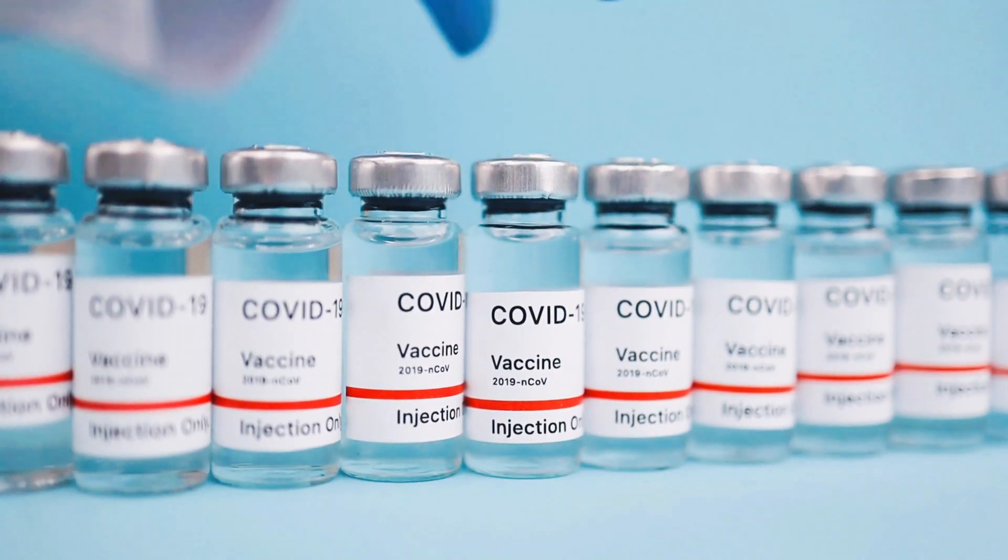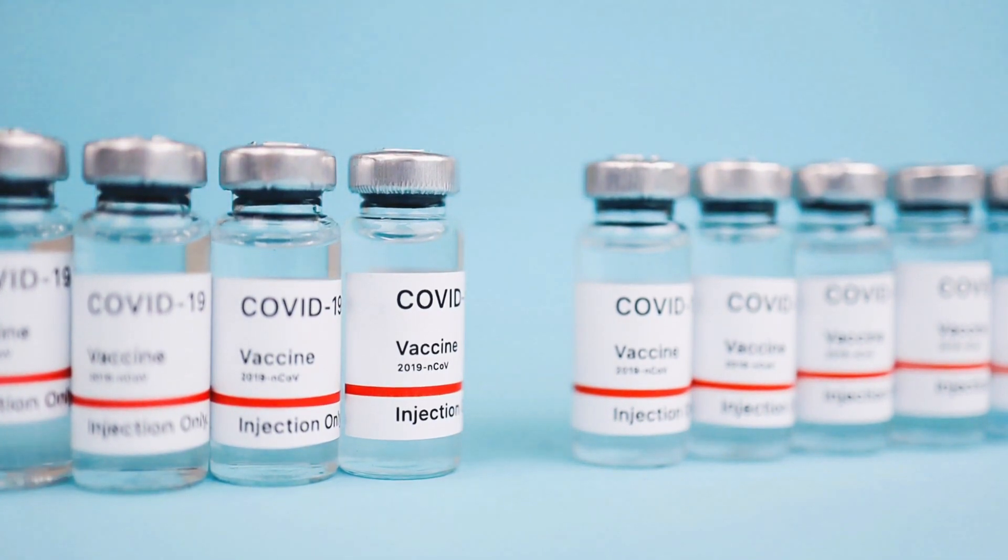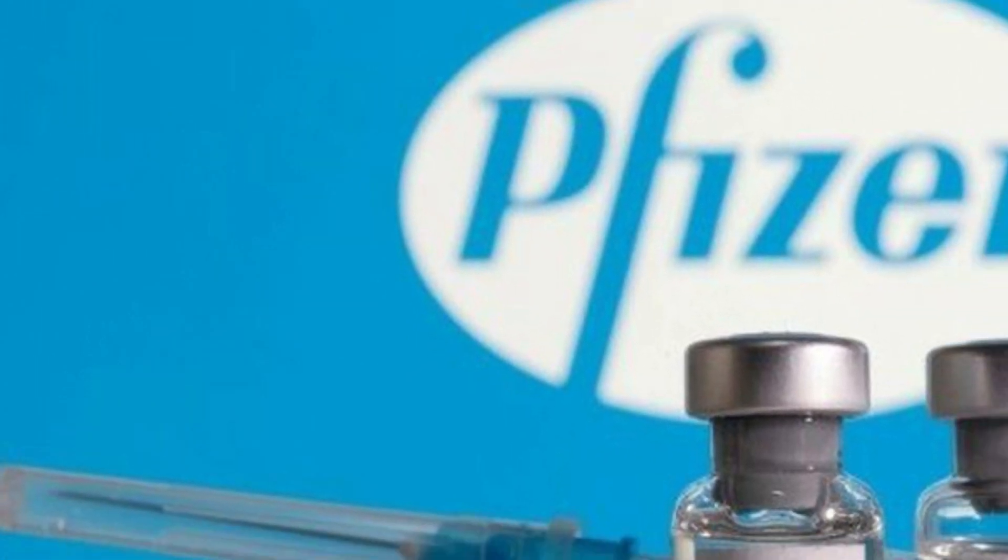To be fully vaccinated, you will need two shots of some COVID-19 vaccines. If you get a COVID-19 vaccine that requires two shots, you are considered fully vaccinated two weeks after your second shot. Pfizer-BioNTech and Moderna COVID-19 vaccines require two shots.